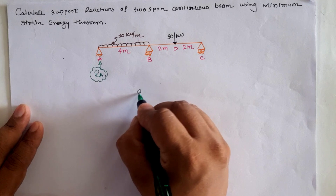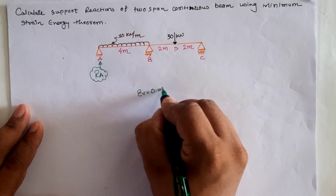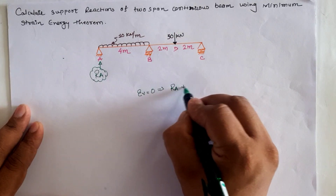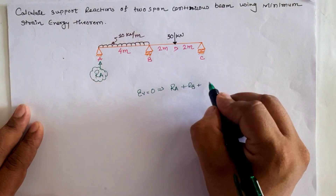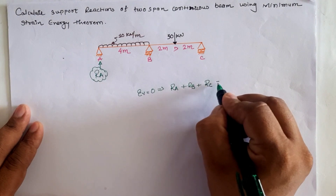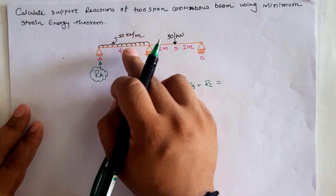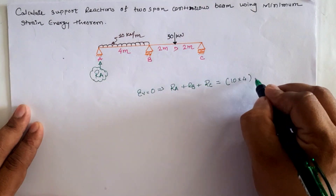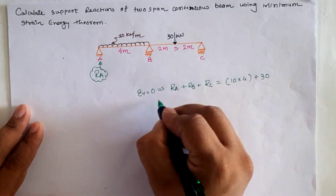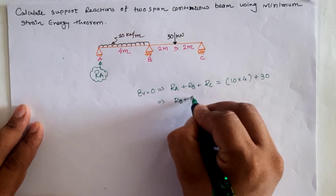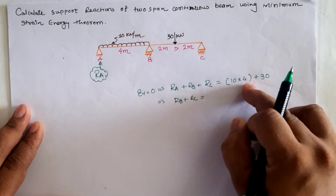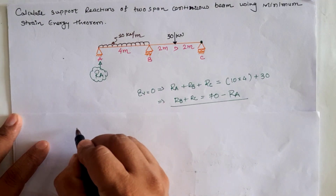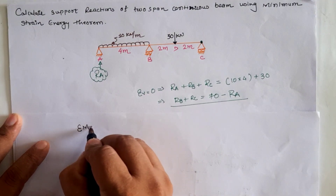Taking sigma V equal to 0, we have vertical reaction Ra, vertical reaction at B as Rb, and vertical reaction at C as Rc, which must equal the total downward load: 10 times 4 from the UDL load, plus 30 kN downward load. So the total reaction at B and C must equal 10 × 4 + 30 = 70 minus the redundant reaction Ra.